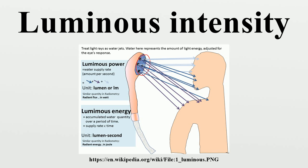This curve, denoted V(λ), is based on an average of widely differing experimental data from scientists using different measurement techniques. For instance, the measured responses of the eye to violet light varied by a factor of 10.